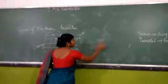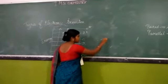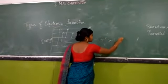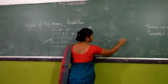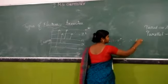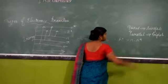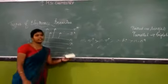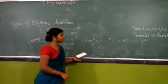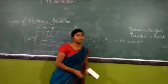The energy increases in the order: sigma to sigma star, n to sigma star, pi to pi star, and n to pi star. This is the energy level ordering for these electronic transitions.